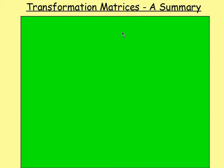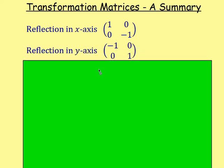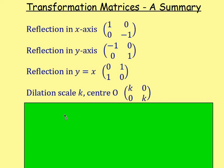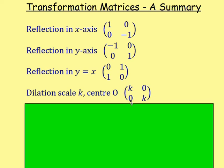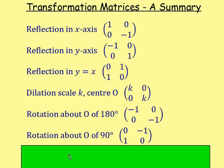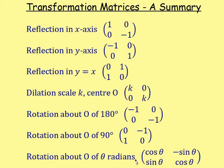A summary of all the transformation matrices you need to know: reflection in the x-axis is [1, 0, 0, -1]; reflection in the y-axis is [-1, 0, 0, 1]; reflection in the line y equals x is [0, 1, 1, 0]; a dilation with scale factor 2 centered at the origin is [2, 0, 0, 2], and generally scale k gives [k, 0, 0, k]; rotation of 180 degrees about the origin is [-1, 0, 0, -1]; rotation of 90 degrees about the origin is [0, -1, 1, 0]; and rotation of θ radians or degrees is [cos θ, -sin θ, sin θ, cos θ]. This last one is the only one on the formula sheet.